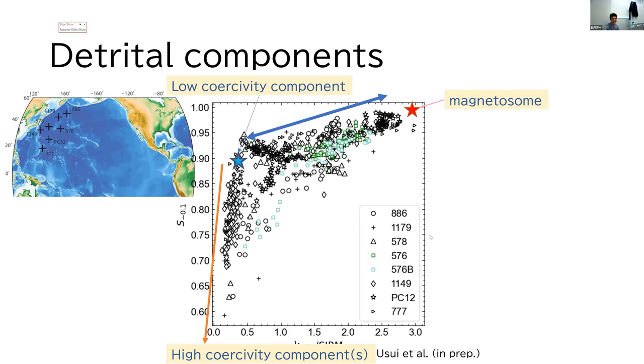I suggest these data can be interpreted in this way. From one low coercivity terrigenous component, one line connects to a magnetofossil and there is another line extending to a lower S-ratio in other words higher coercivity.